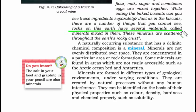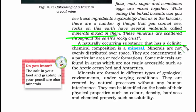Rocks on earth have several materials called minerals which are mixed in them. These minerals need to be extracted, processed and then used, but their origination is from rocks. A fine definition for mineral is a naturally occurring substance that has a definite chemical composition. Minerals are not evenly distributed on earth — you will not find minerals everywhere in equal proportion. They are usually concentrated in areas where there is a lot of rock formation.